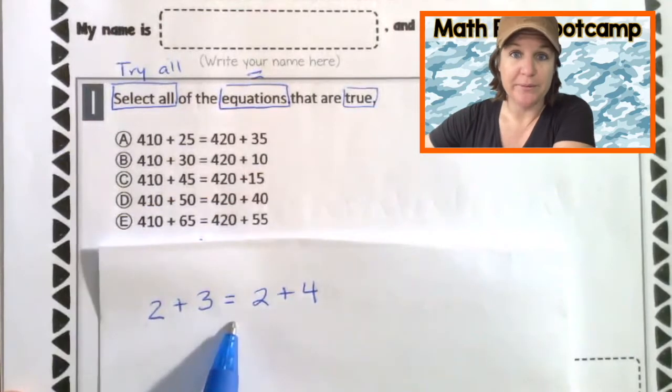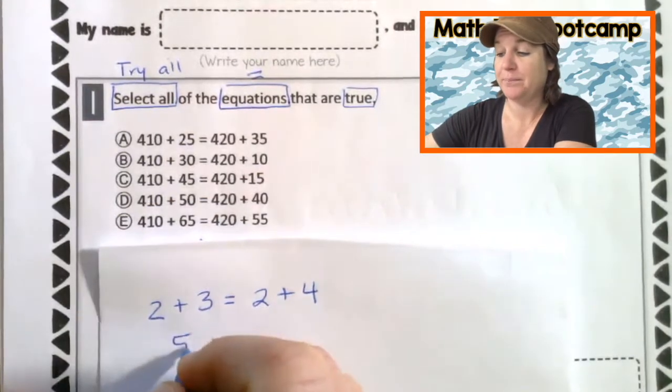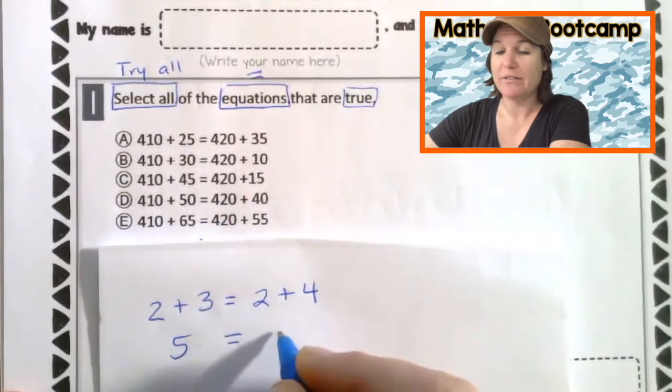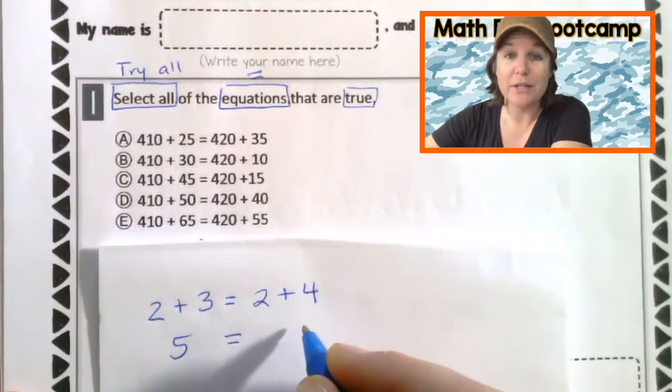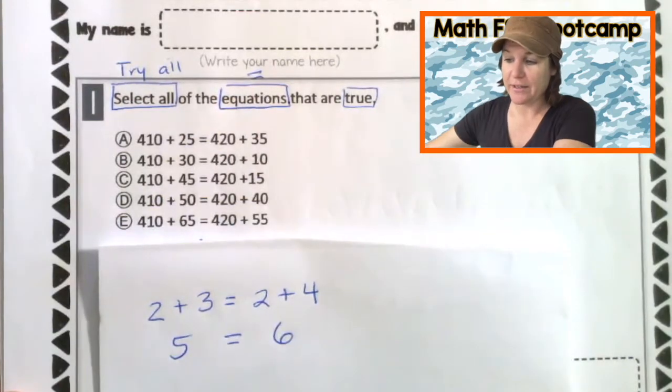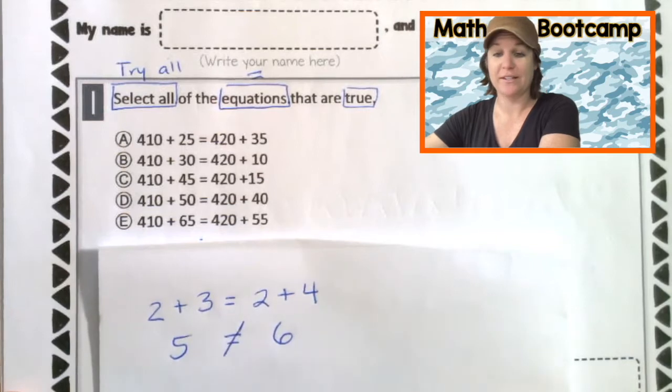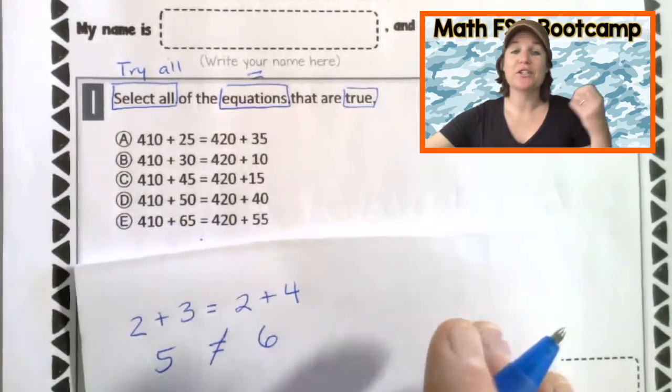So for instance, two plus three, two plus four, let's just throw that out there. What is two plus three? It's five, right? So this side of the equation equals five. And this side of the equation two plus four equals what? Six. Okay. Five is not equal to six. So therefore this equation is not true.